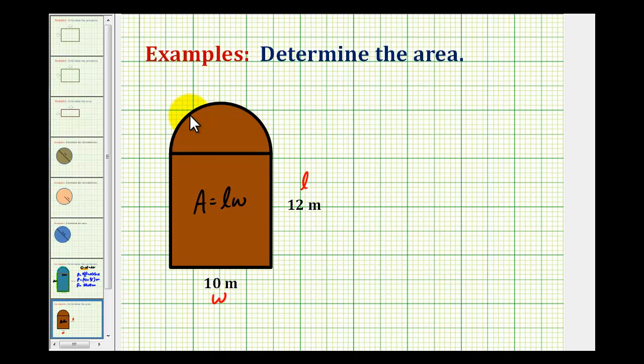Then to determine the area of half of this circle, we'll use the formula area equals pi r squared, where r is the length of the radius, but then we'll divide this by two, because we only have half of the circle.